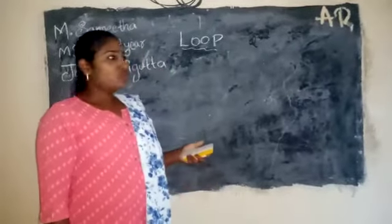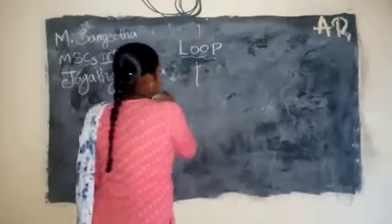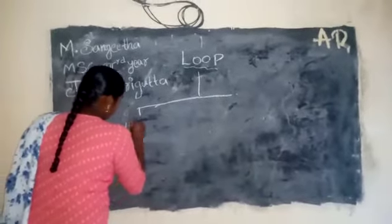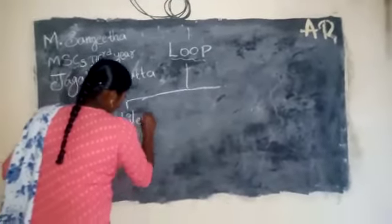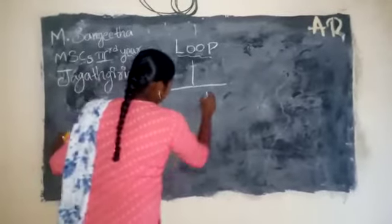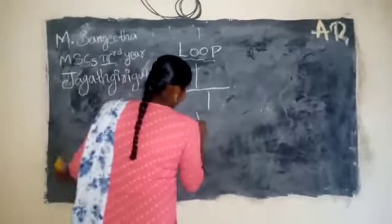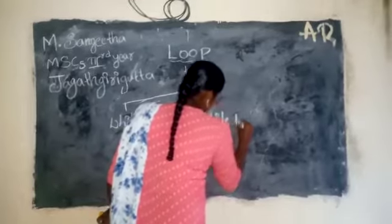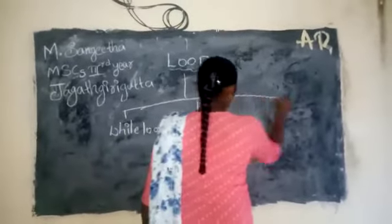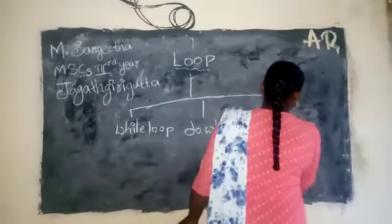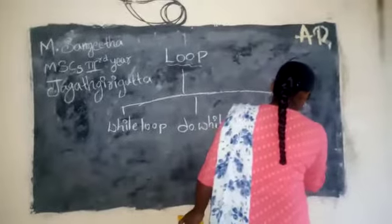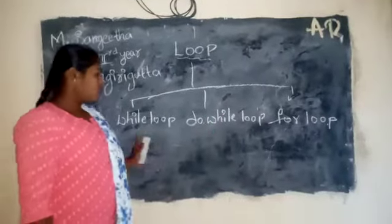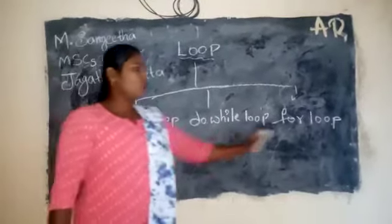In the types of loops, we have three types of loops: while loop, do-while loop, and for loop.